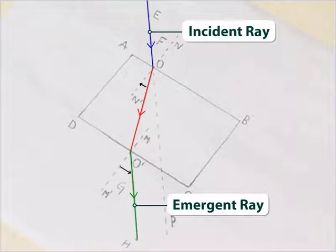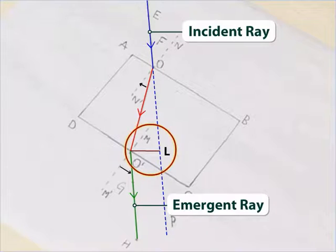The emergent ray O'H is parallel to the incident ray direction EP. Light does not change its direction when refracted inside the glass slab. However, it shifts laterally. This shift is shown by O'L.